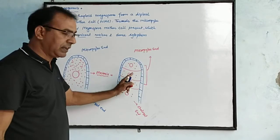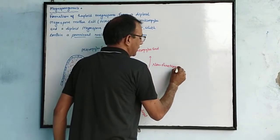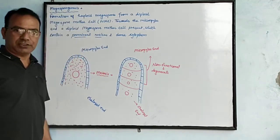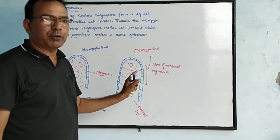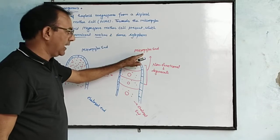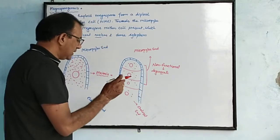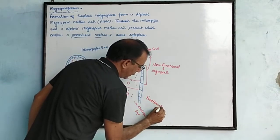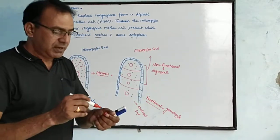The three cells towards the micropylar end are non-functional — they have no function, so they degenerate. After meiosis, the diploid Megaspore mother cell breaks down into four haploid cells. The three cells towards the micropylar end are non-functional and easily degenerate. The one cell towards the chalazal end is functional and forms the gametophyte, which then takes part in the next division process.